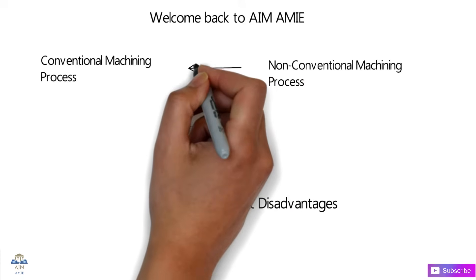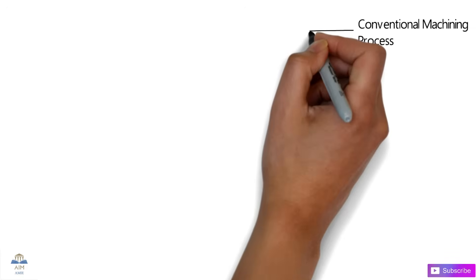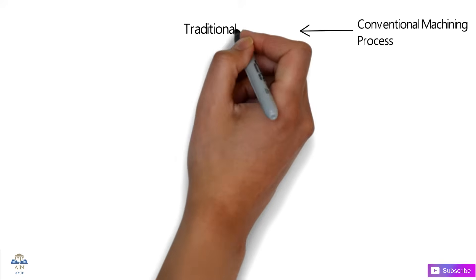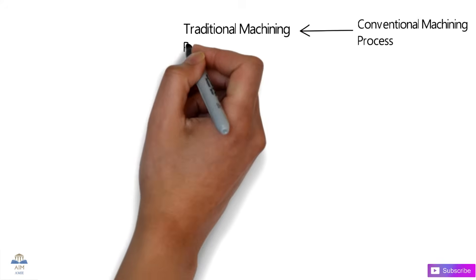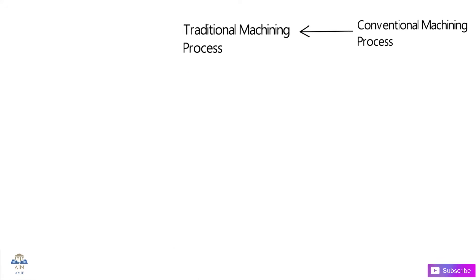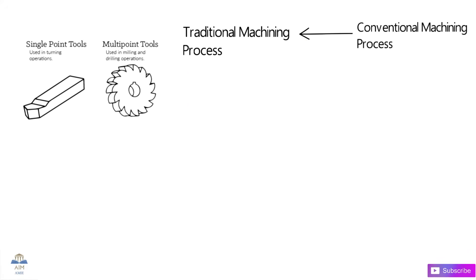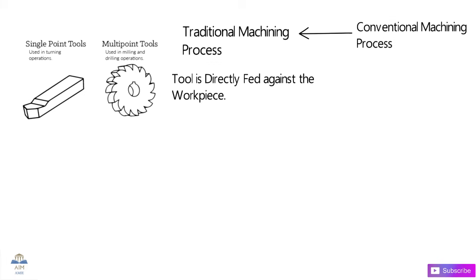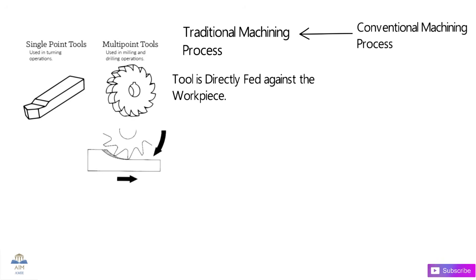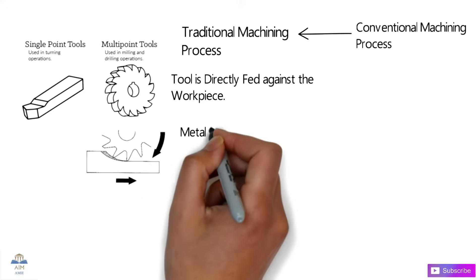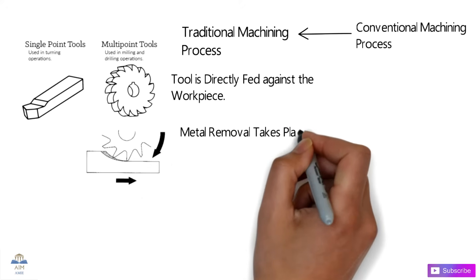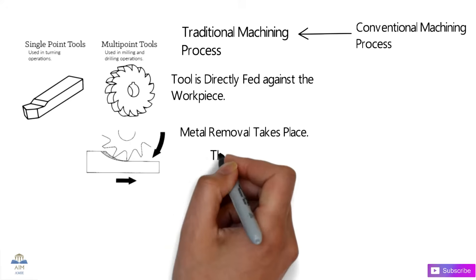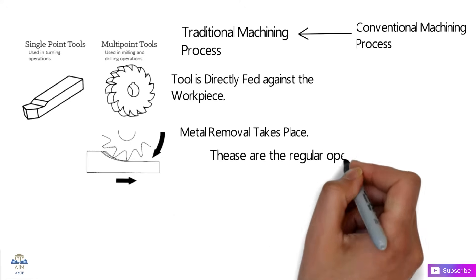Conventional machining can also be called traditional machining, as the operations are carried out following tradition. In traditional machining, single-point and multi-point cutting tools are used and fed against a rotating or stationary workpiece. As the tool is directly fed against the workpiece, cutting and metal removal takes place.